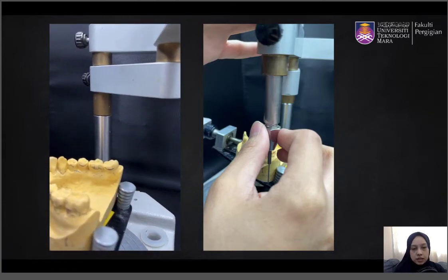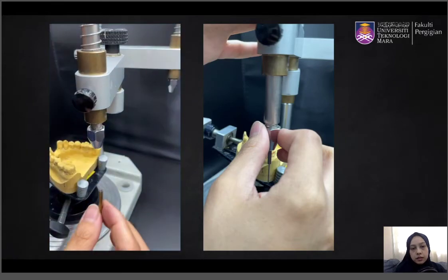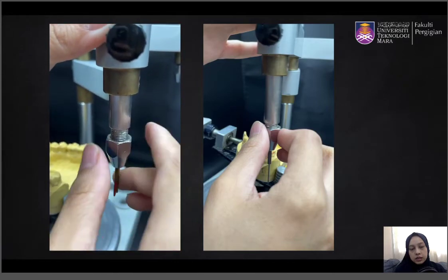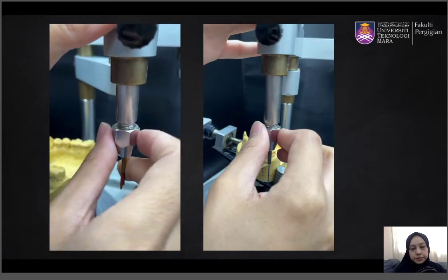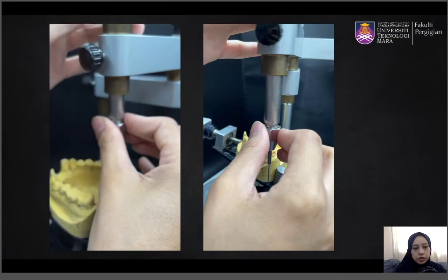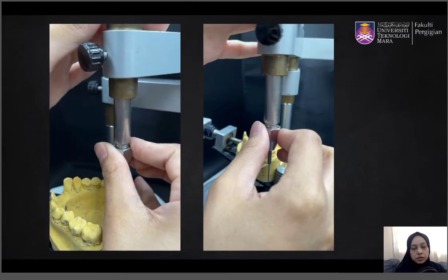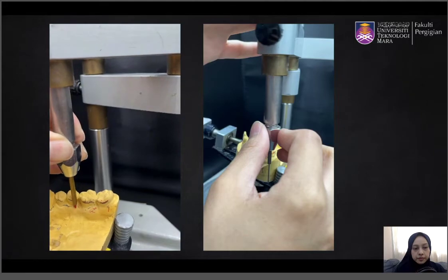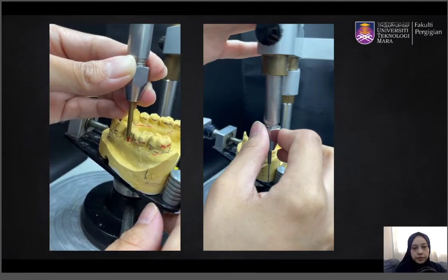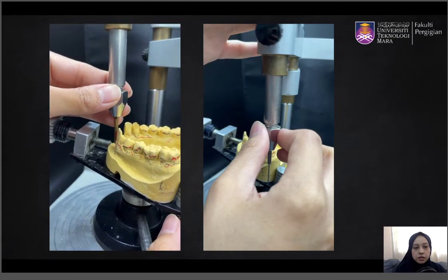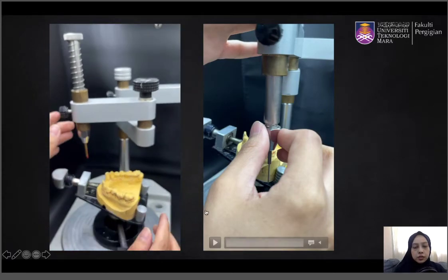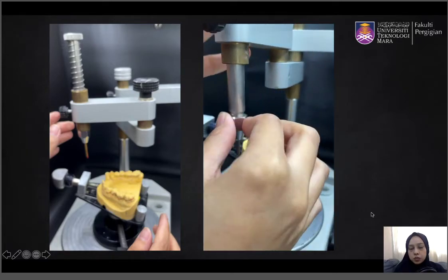Changing the tilt means you are changing the path of insertion. The surveying needs to be done again with a different colored carbon — in this case, a red carbon. Continue and complete the surveying on both the hard tissue and soft tissue areas, then record this new tilt by performing another tripody.